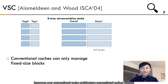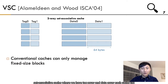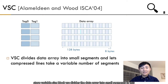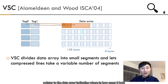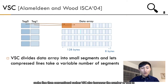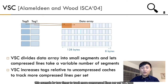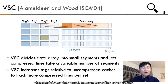Let's talk about how VSC improves over conventional cache architecture. Conventional caches without compression only manage fixed-sized blocks — for example, in a two-way set-associative cache with tag array and data array, each cache tag corresponds to a fixed 64-byte cache-line block. In order to store variable-sized blocks, VSC divides the data array into small segments — in this example, 8-byte segments — and lets compressed lines take a variable number of segments. The tag now stores not only the address of the cache block, but also a pointer to the data array indicating where and how many 8-byte segments the compressed block takes. VSC also increases the number of tags — by two times in this example — to track more compressed lines per set, allowing fast access to compressed cache lines stored compactly.